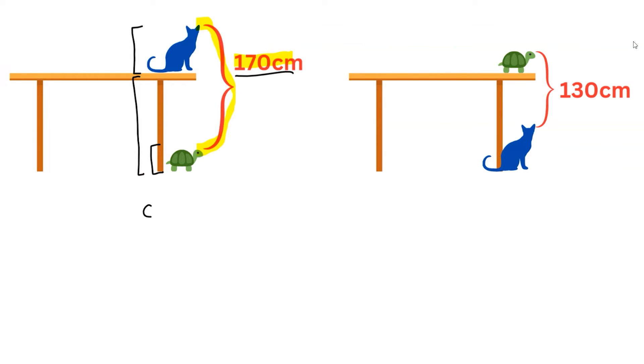So the equation we can form is: height of cat plus height of table minus height of turtle, because this portion we have to exclude since the length is given up to the head. So this is given as 170.